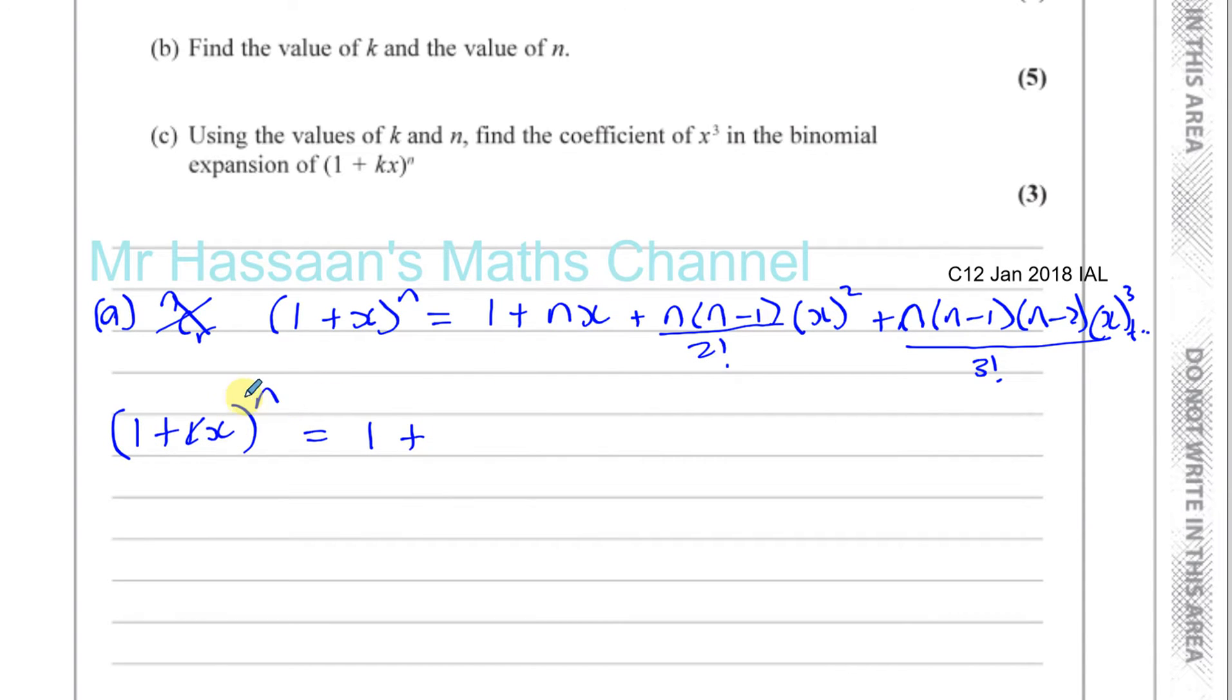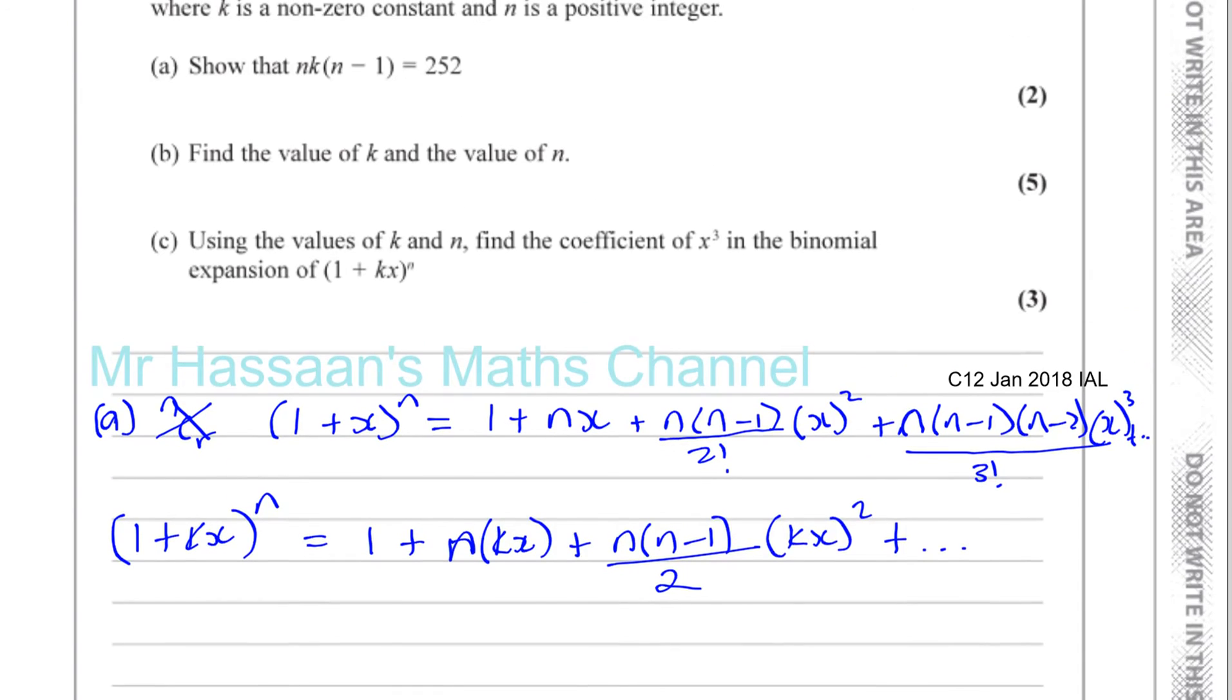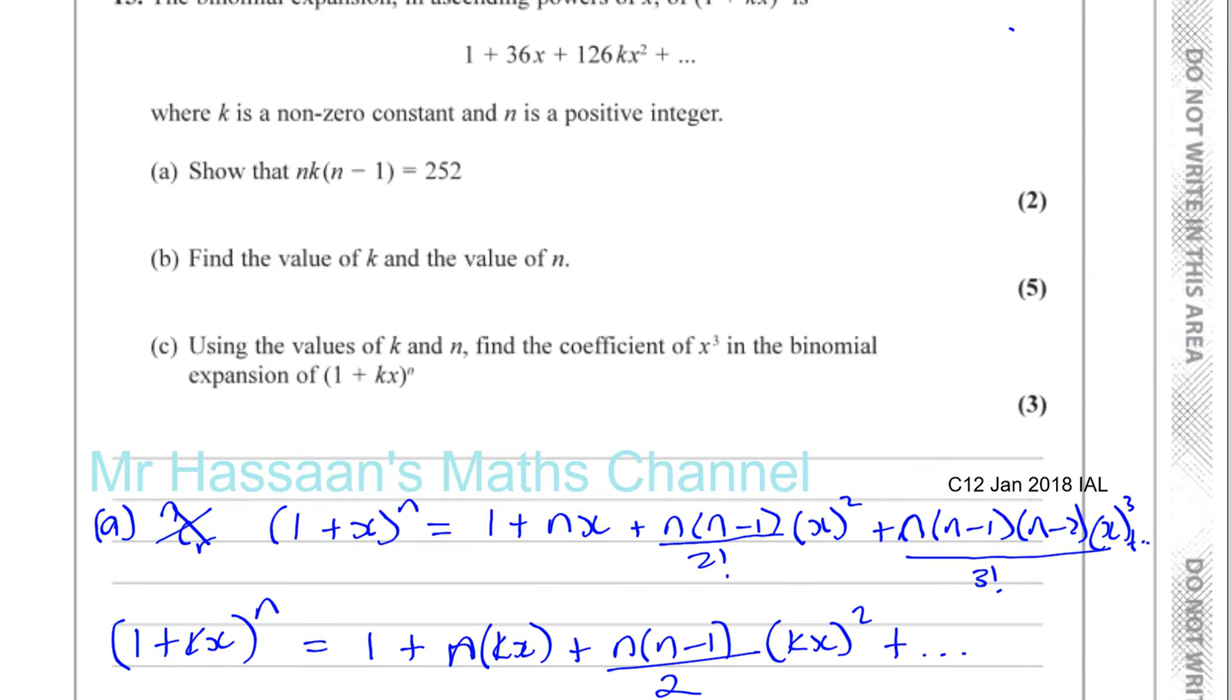That'll be 1 plus kx. Now, nx, nx means the power times whatever's in this position here. So it's n times kx, okay, so it's that times this term plus n times n minus 1 over 2 factorial, which is 2 times 1, which is 2, times kx squared. And we can stop there, because we only need, as you can see, up to x squared.